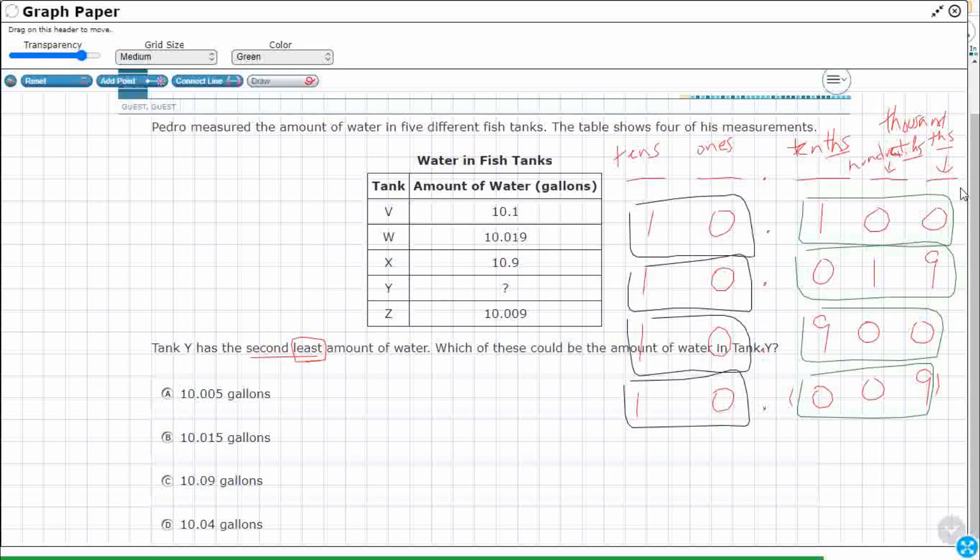So, if I'm looking at least to greatest, let's do least to greatest. My smallest is going to be that nine. So, I'm going to write ten point zero zero nine. Now, tank Y is the second least. So, there's going to be a blank. So, I'm going to leave that blank.